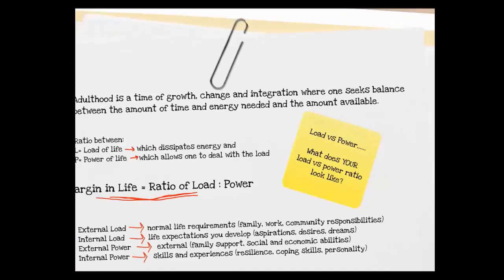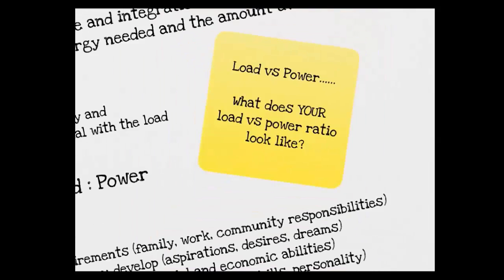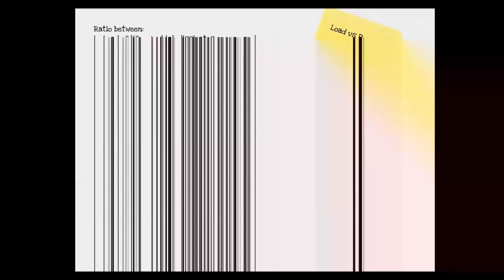Let's reflect. What does your own load versus power ratio look like? Your external load refers to your normal life requirements, such as family, work, and community responsibilities. Your internal load refers to your life expectations that you develop, like your goals and dreams. External power refers to things like your family support and your social and economic stability. And your internal power refers to things such as your resilience, your personality, and your coping skills.